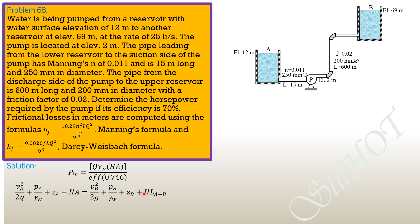Elevation head at B is 69. Head loss from A to B includes frictional losses by Manning's formula and by Darcy-Weisbach formula. Substituting: 0 + 0 + 12 + H_A = 0 + 0 + 69 + h_f (Manning) + h_f (Darcy-Weisbach).